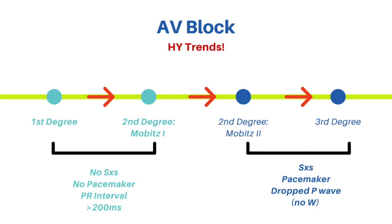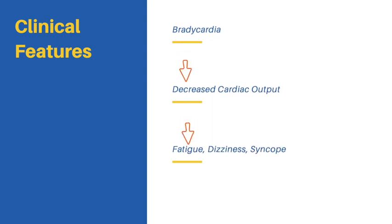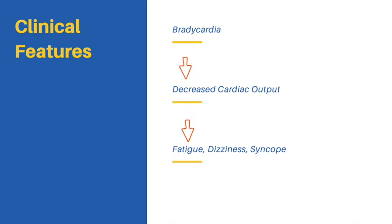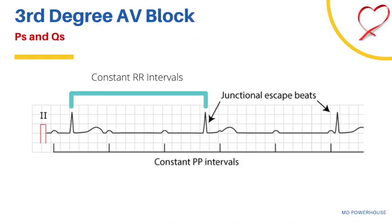What clinical features can you actually see in these patients? They can have bradycardia due to issues with AV conduction, leading to decreased cardiac output. This can cause symptoms such as fatigue, dizziness, and syncope. This is also one way to distinguish third degree heart block — those patients will be symptomatic, with regular P-to-P intervals, regular R-to-R intervals, and no association between the atria and ventricles. The clinical vignette will describe a patient with weakness, dizziness, fatigue, and even syncope.